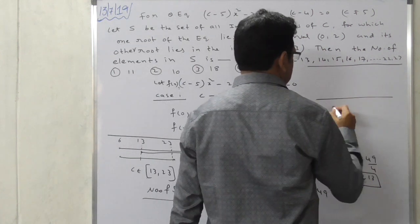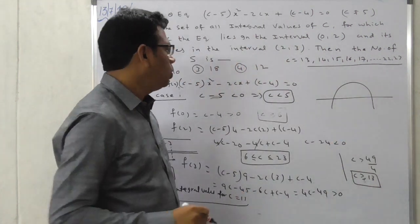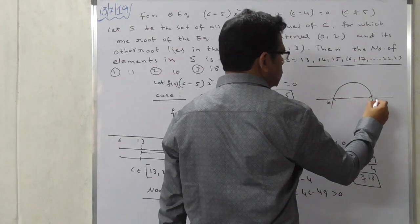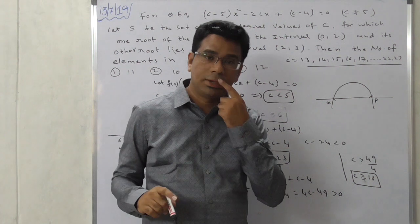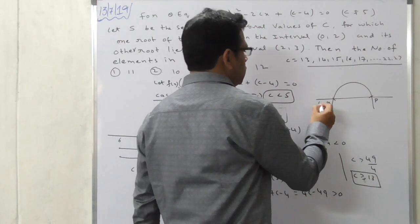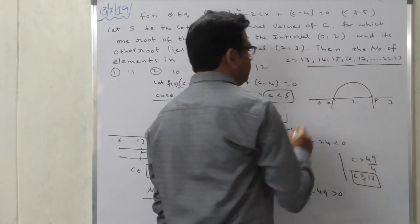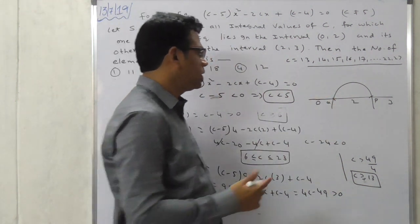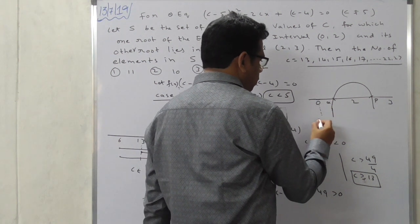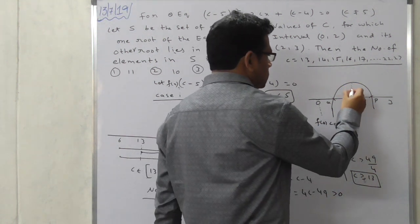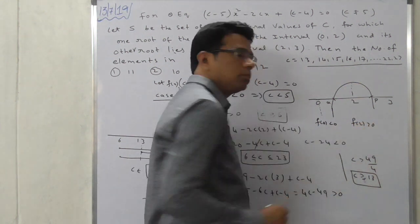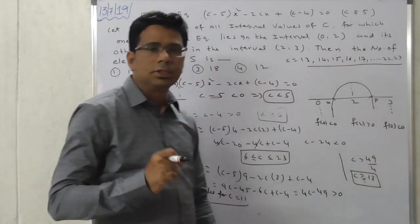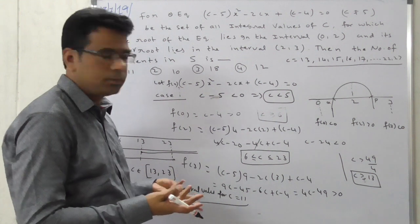For Case 2, when the x² coefficient is negative, the graph is a downward parabola. One root alpha lies in (0, 2) and root beta lies in (2, 3). For a downward parabola: f(0) < 0, f(2) > 0, and f(3) < 0 — completely the reverse of Case 1.